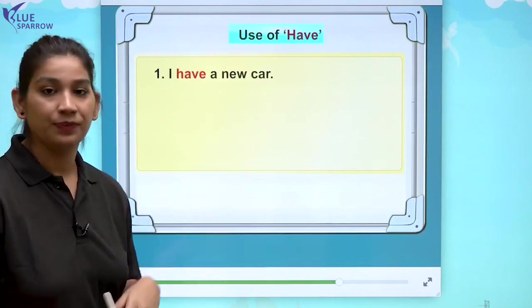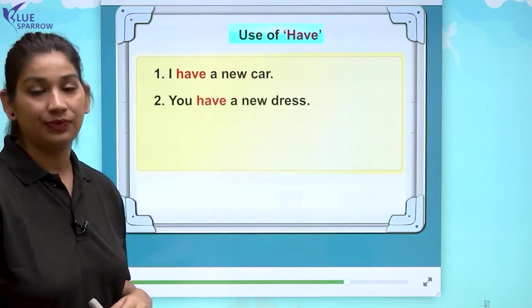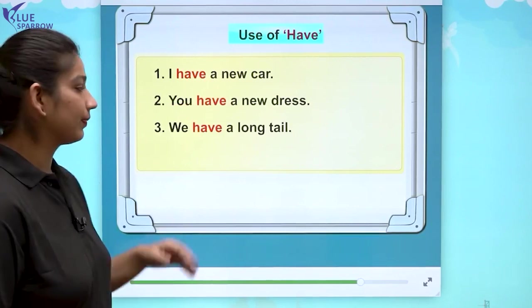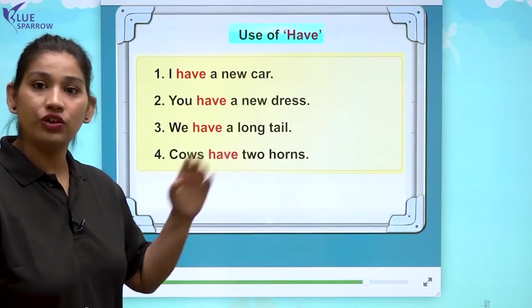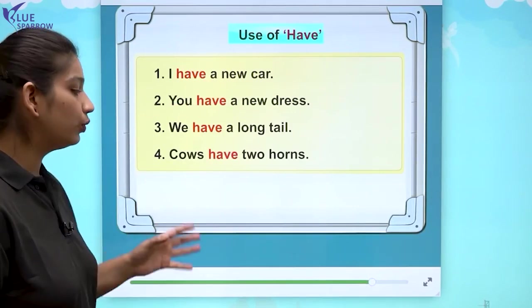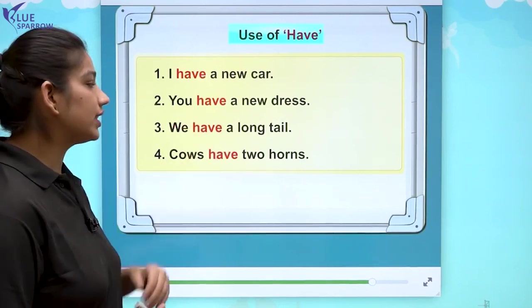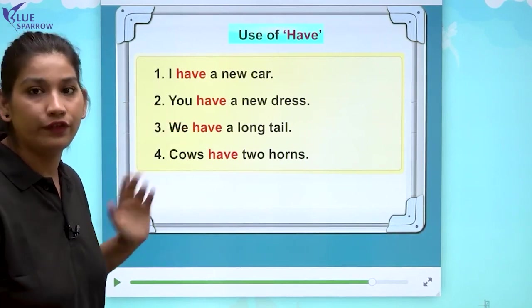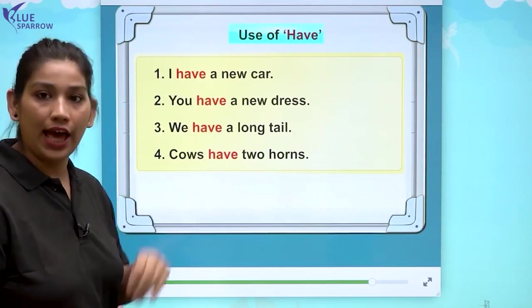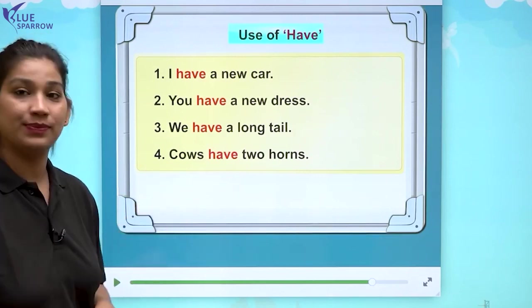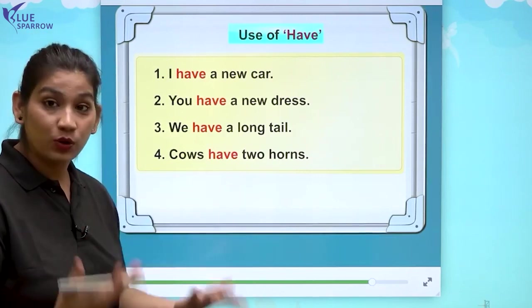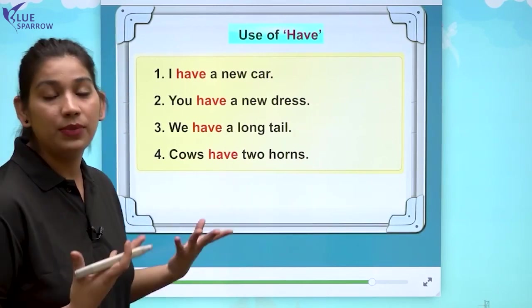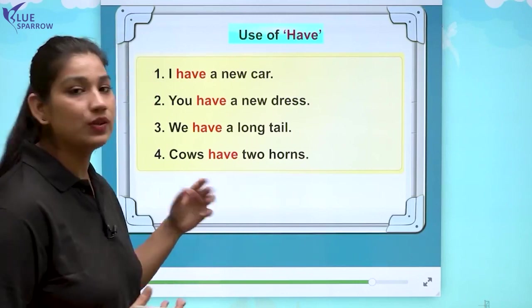Now let us see the use of have. I have a new car — I ke saath hum have use karte hai. You have a new dress. We have a long tail. Cows have two horns. In all of the sentences you can see I, you, we — these are plural form, isliye unke saath have ka use kiya hai. Cows bhi matlab bohut saare cows, more than one cow, isliye cows ke paas horns hoote hai — they belong to cows, that's why we use have here.